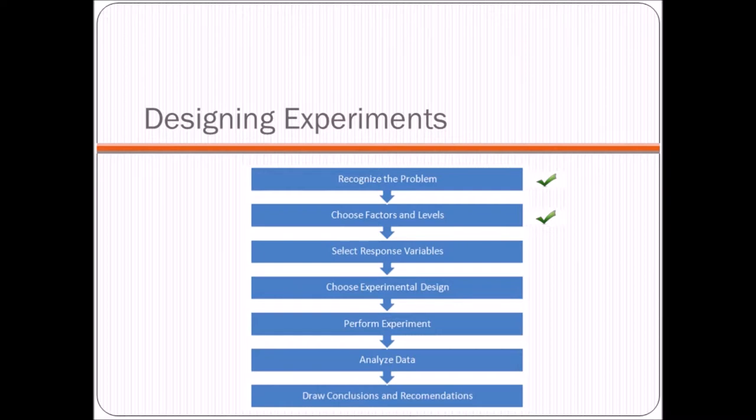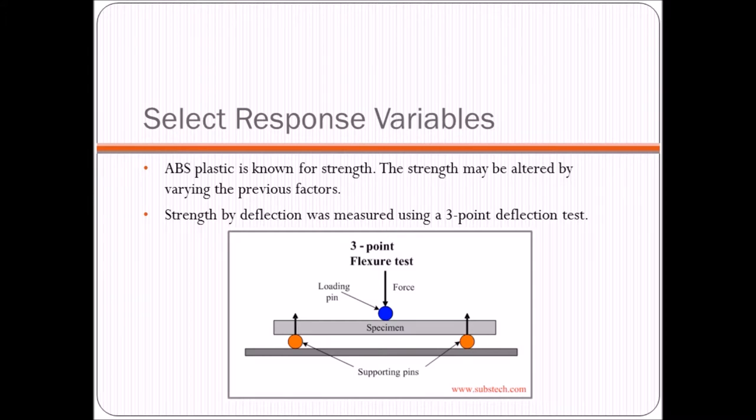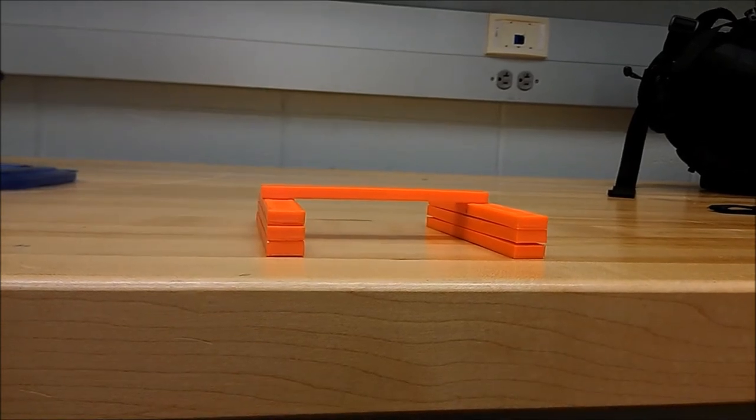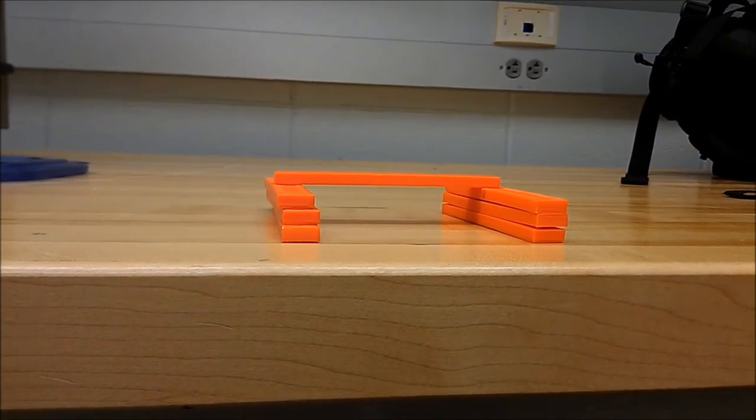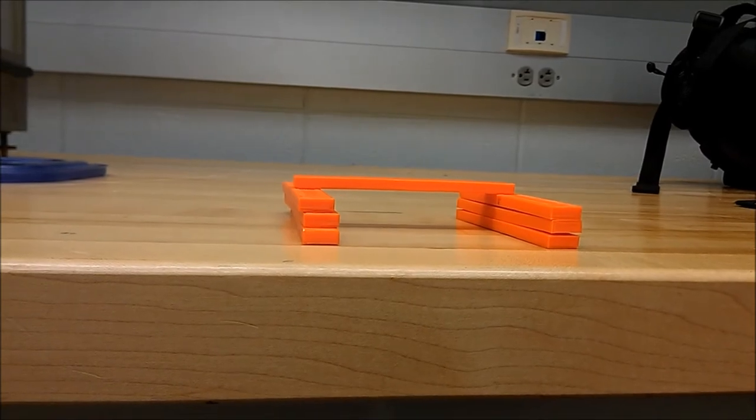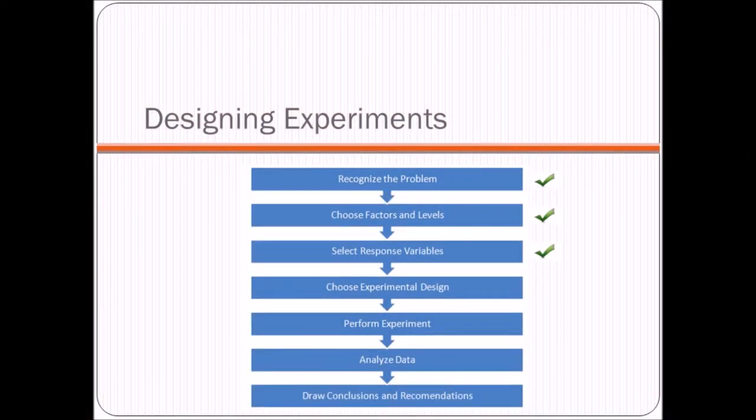So we've chosen our factors and their respective levels. The next thing to do is select a response variable. As we've already alluded to, the response variable that we chose was strength. Specifically, how can the strength be altered by varying the previous parameters? Well, we decided to do a strength by deflection test, which we'll go into more detail later. Here we have a rough example of the deflection test that we performed on our parts. We would count the number of pixels that was deflected by that movement of the part.